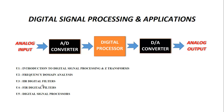The next two units will cover infinite impulse response filters and finite impulse response filters. The fifth unit covers various practical digital processors that are available, that is the TMS C54xx family. This was the basic introduction and the necessity for you to understand what is the importance of the subject. Thank you.